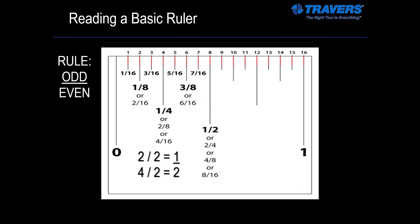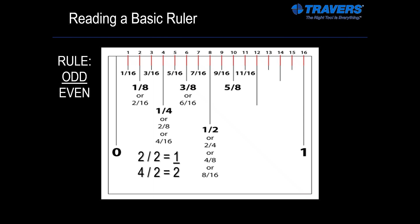So you probably recognize the pattern here, and we can just keep going. The next one is nine sixteenths. Next one is five eighths — it would really be ten sixteenths, but we have to do the math to bring it to five eighths. Next is eleven sixteenths, and so on, right up until you have fifteen sixteenths, and then finally the whole inch.